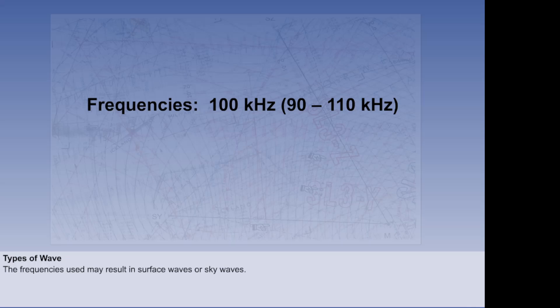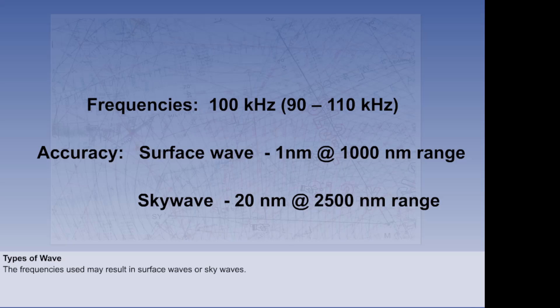The frequencies used are between 90 and 110 kHz. This puts them in the LF band. Depending on the propagation characteristics of the atmosphere and the range, this may result in surface waves or skywaves. Surface waves are more accurate. Their error depends on range but is only 1 nautical mile at 1000 miles. Skywave accuracy is quoted as 20 nautical miles at a range of 2500 miles.